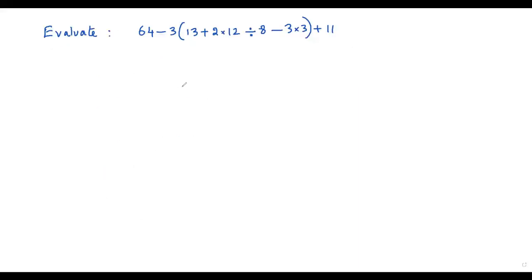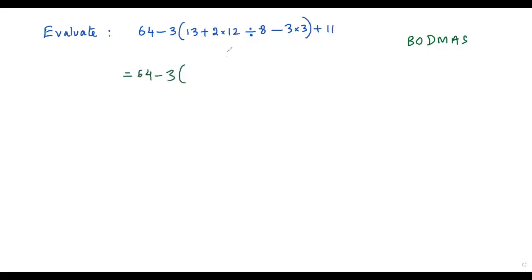Let's look at another example. We have a numerical expression with multiple operations. We follow BODMAS — first B for brackets. But even inside the bracket, there are multiple operations, so we apply BODMAS inside the brackets too. Inside the bracket we have addition, multiplication, division, subtraction, and multiplication. Since multiplication and division appear together, we go left to right — multiplication comes first, so 2 times 12 is 24.